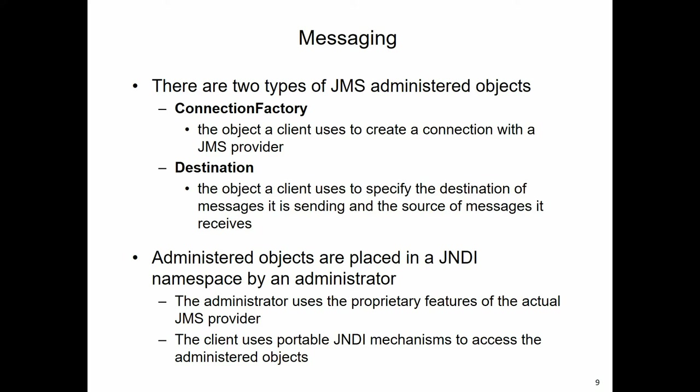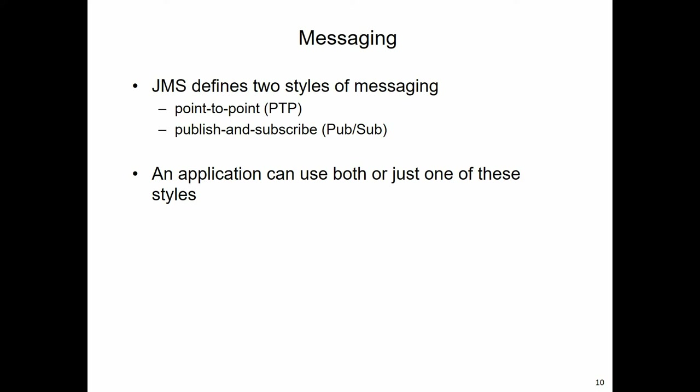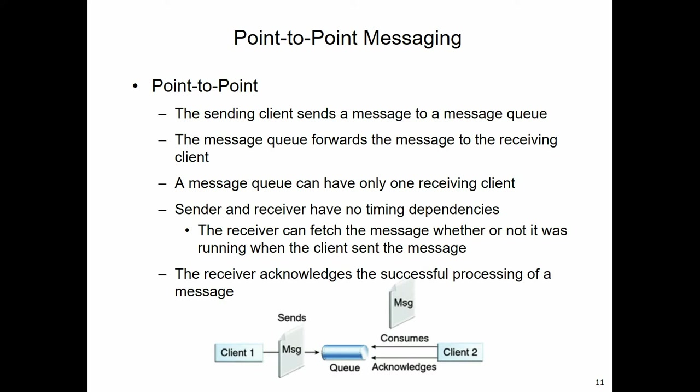There are two styles of messaging: point-to-point and publish-and-subscribe. In point-to-point, a sending client sends a message to a receiving client via a message queue. The diagram explains it - you can see that we have a queue, which is a destination. That destination is where the sending client will send a message, and that message will be held in the queue until the receiving client consumes it.